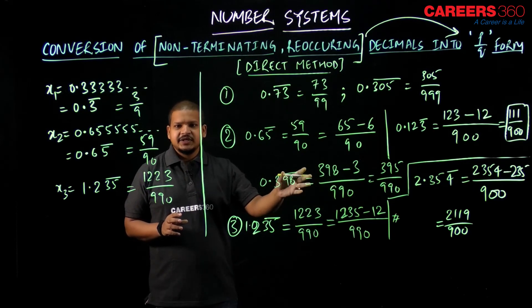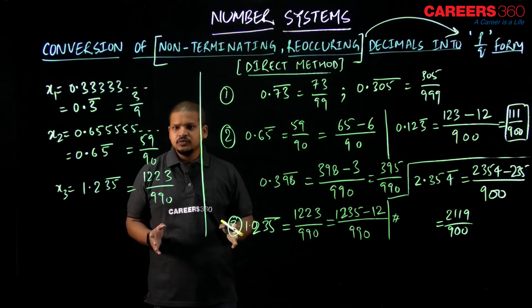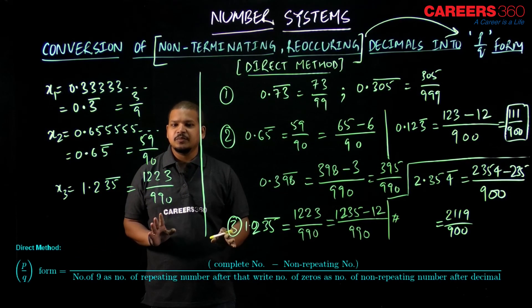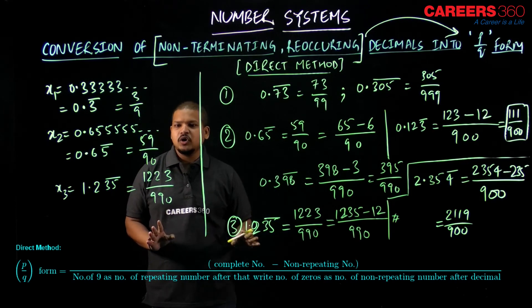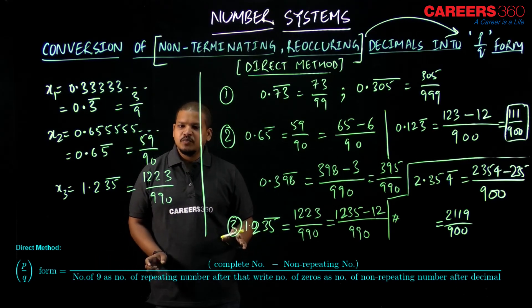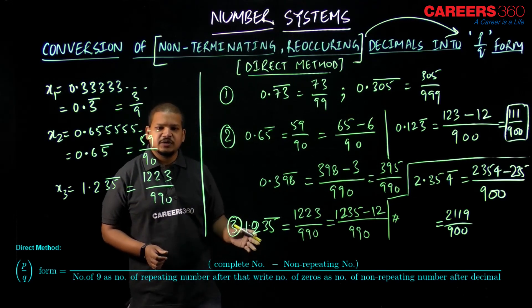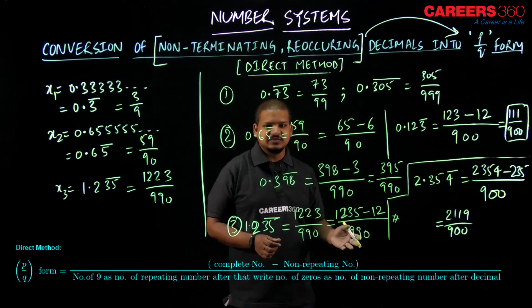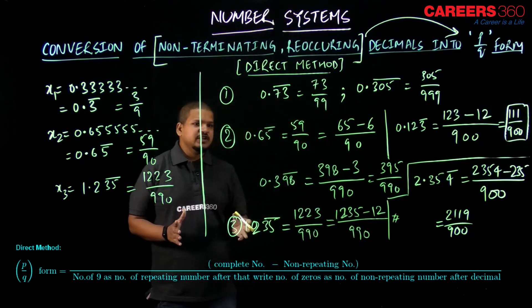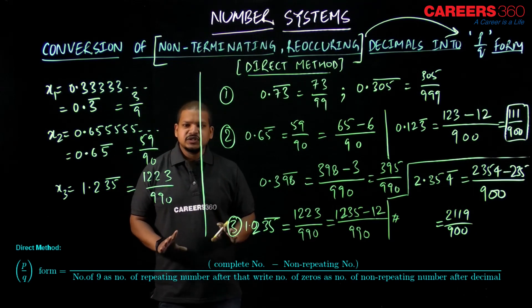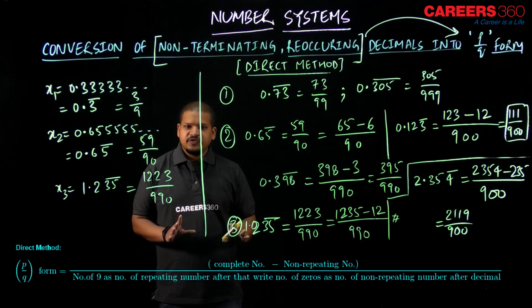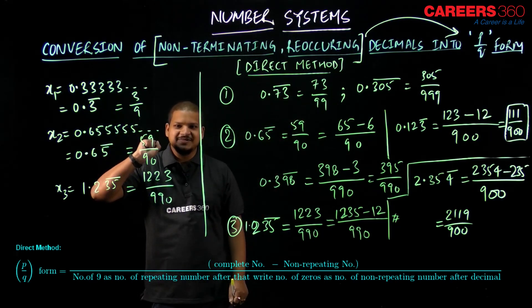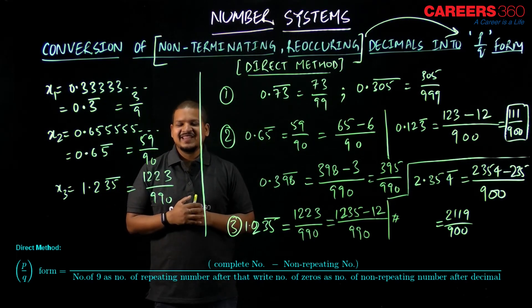I have also written down the general formula for you: the p/q form equals (complete number − non-repeating number) divided by (9s written as many times as the number of repeating digits, followed by zeros written as many times as the number of non-repeating digits after the decimal). Using this formula we can get the p/q form of any type of decimal. Thank you so much.